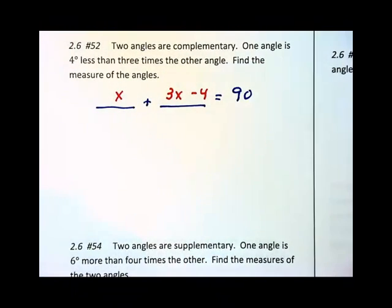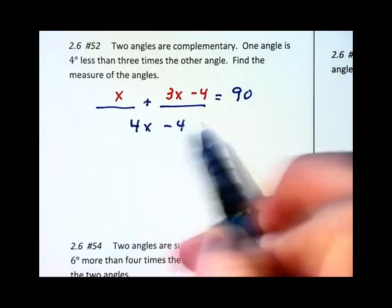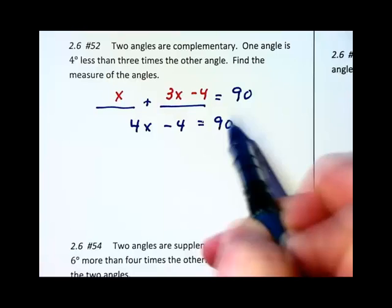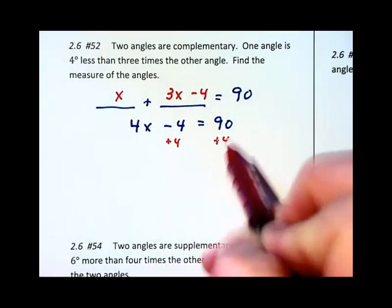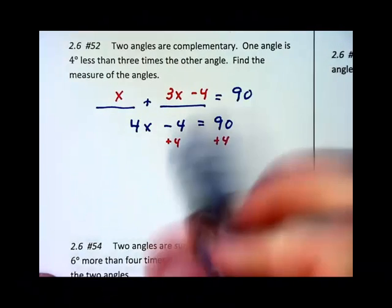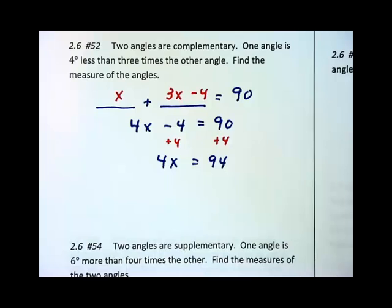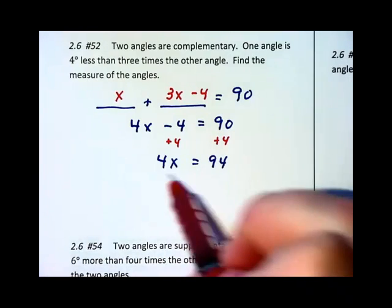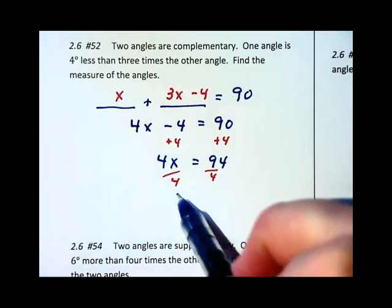Now I've got an equation to solve. Combining like terms we have 4x minus 4 equals 90. Adding 4 to each side gives us 4x equals 94. And dividing 4 on each side we get x equals...